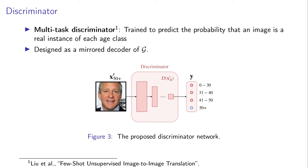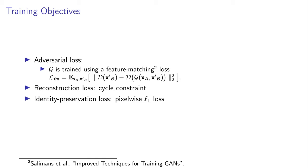We design this discriminator as a mirrored decoder of the generator to maintain correspondence between the layers of the decoder and discriminator. Our training objective is comprised of three parts. We employ an adversarial loss to encourage the generator to synthesize photorealistic images. Instead of training the generator with the usual adversarial loss, we use a feature-matching loss, which encourages the generator to synthesize images that yield the same discriminator outputs as the target images, thereby transferring the precise ageing patterns of the target image.